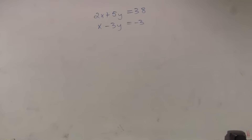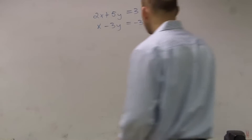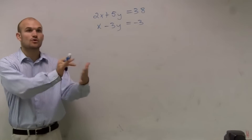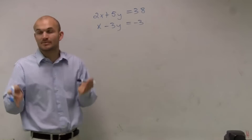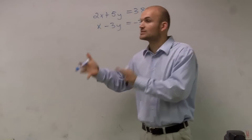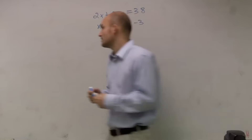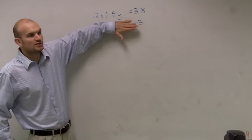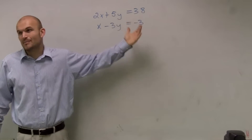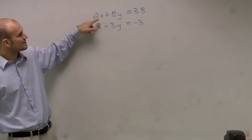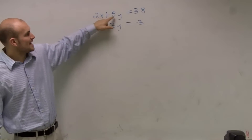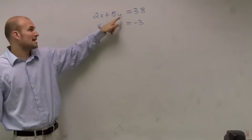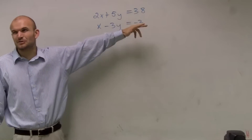So if I was going to solve this by substitution, what I want to make sure I do is I need to have a variable solved by itself. I need to get x equals or y equals, because then I'm going to substitute the value of one of those variables into the other equation. To solve for x, I have to subtract the 5y and then divide by 2, so I'll be left with a fraction — it's going to get a little messy.